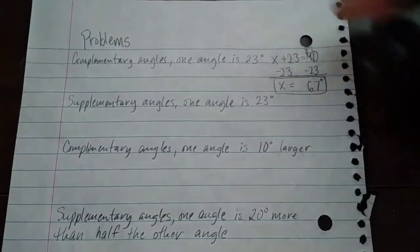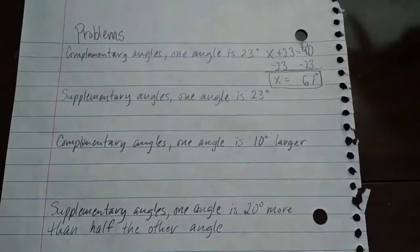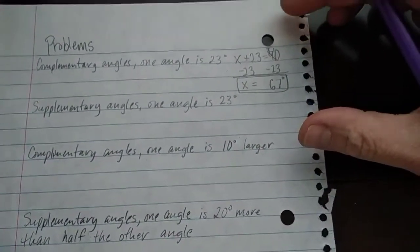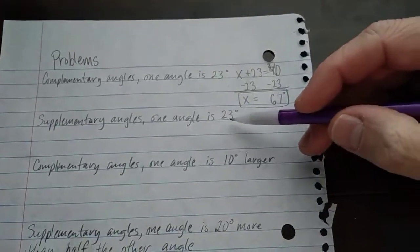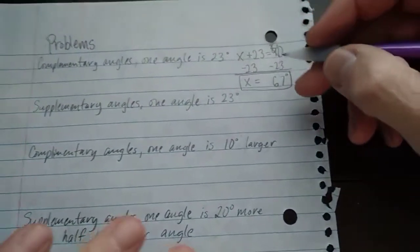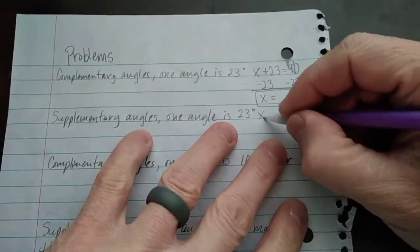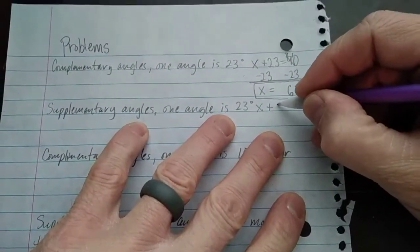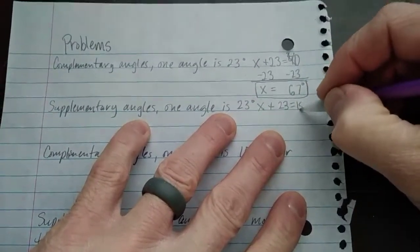The next one is supplementary angles. One angle is 23 degrees. So again we're saying, what measure plus 23 equals 180? And I'm again going to write it that way.